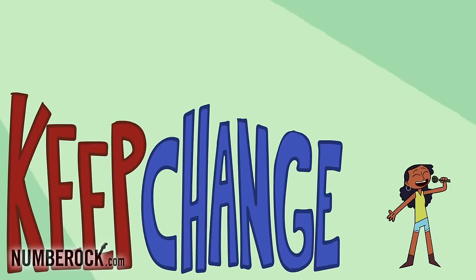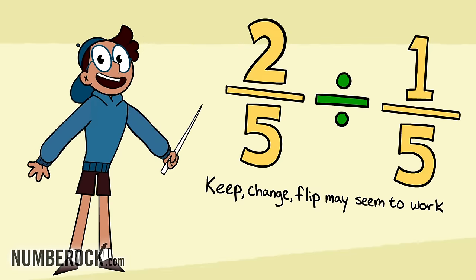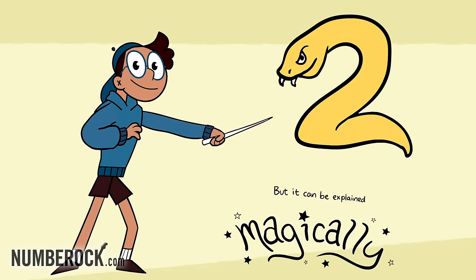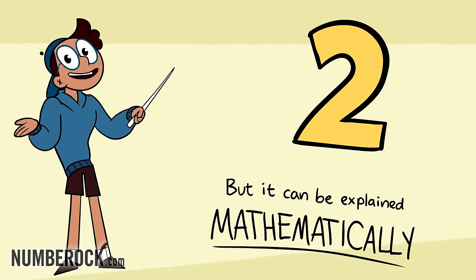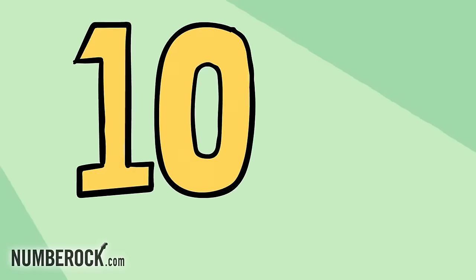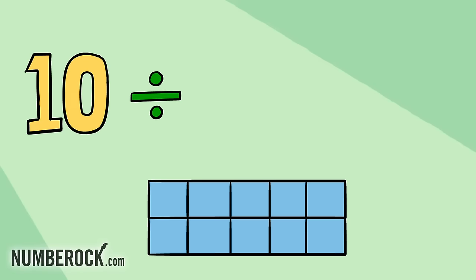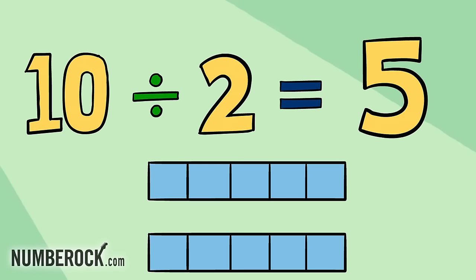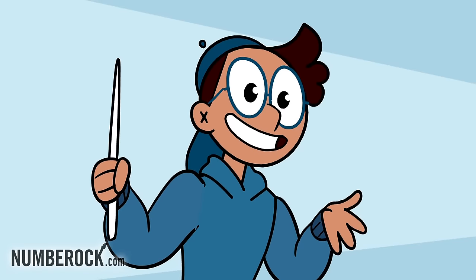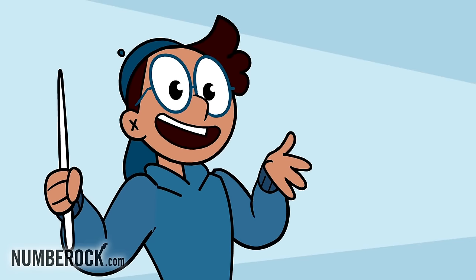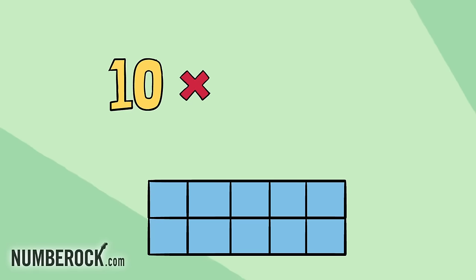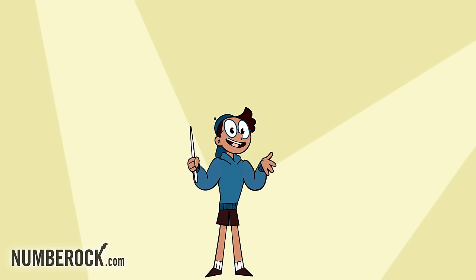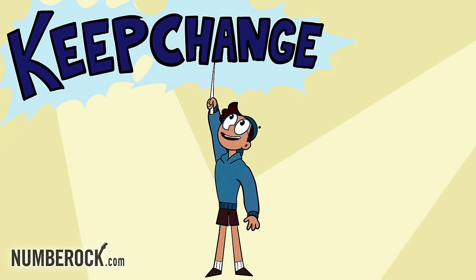Keep, change, flip. Keep, change, flip may seem to work magically, but it can be explained mathematically. With the number ten, we can divide by two, and that will leave five in each group. Or we can find that five through a different path by multiplying ten by two flipped to one-half. It's the trick that never fails called keep, change, flip. It's real mathemagic, so use this tip.